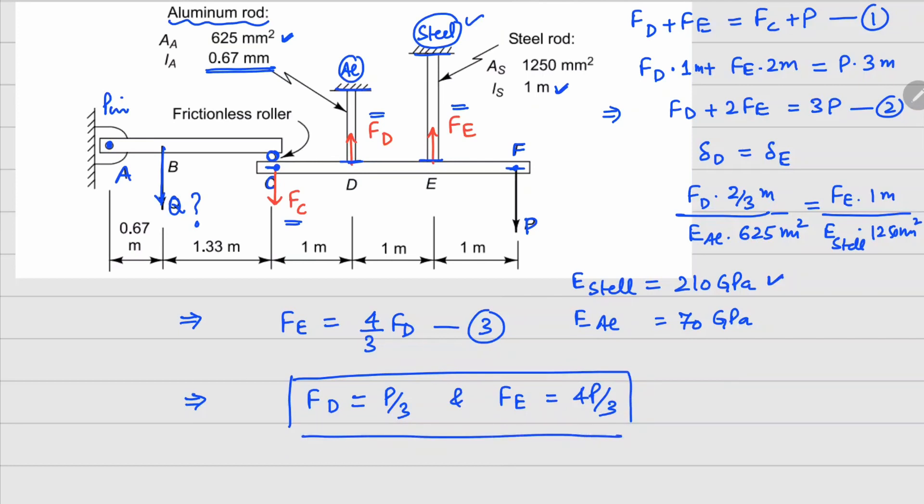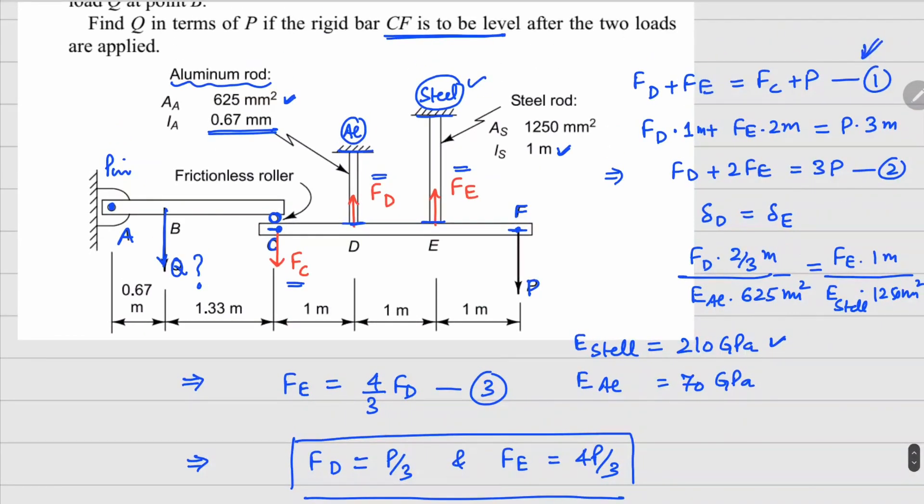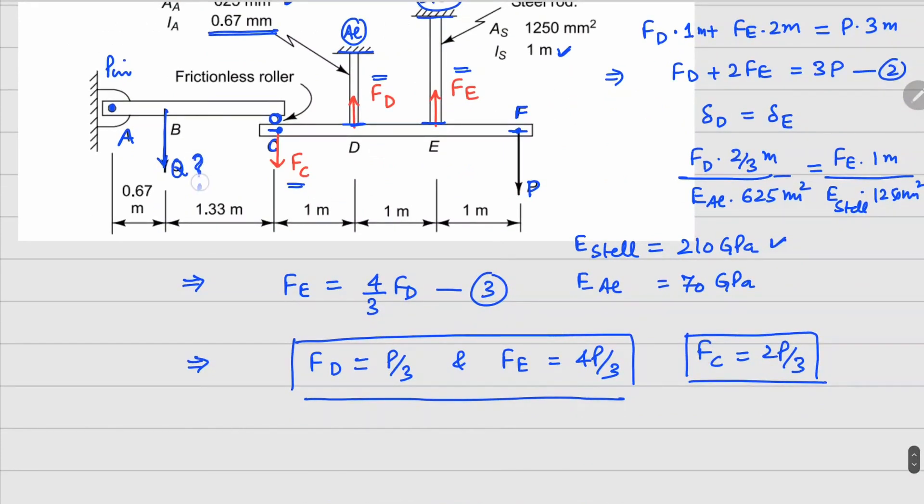I can substitute these values in your equation number one, and this will give us a value of FC equals 2P divided by 3. Now our interest is in Q because this is what we want to solve.